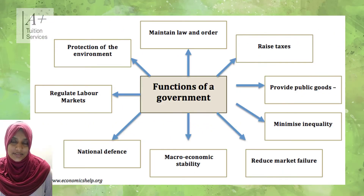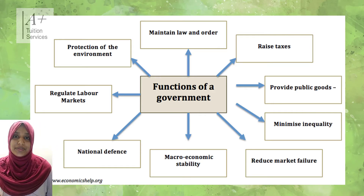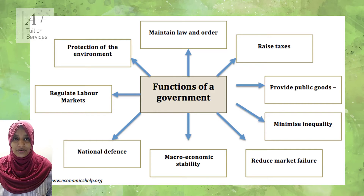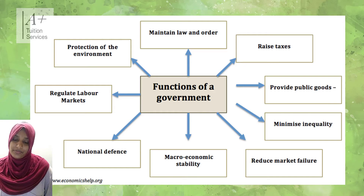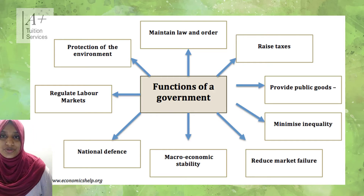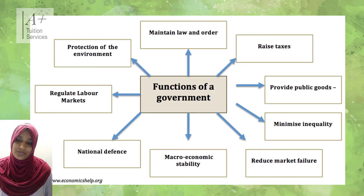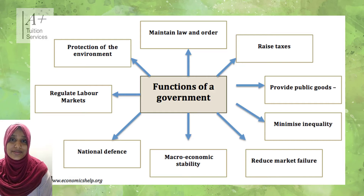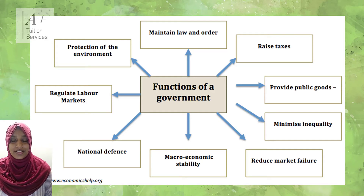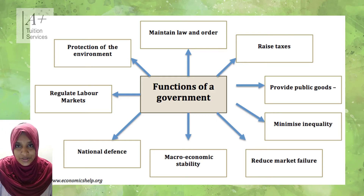So far in this lesson we have looked at the definition of government - the group of people in charge of the country's affairs - and the different branches: the legislative branch, executive branch, and the judiciary. Now we will quickly touch on the functions of the government. The first function is to maintain law and order. The government makes the law, ensures it is enforced and abided by, and by making law they try to keep order in society, because without laws everybody would do as they please.